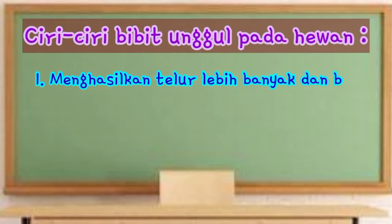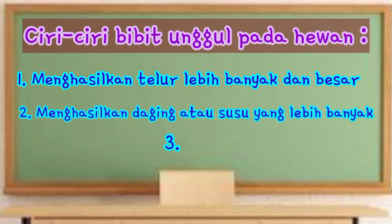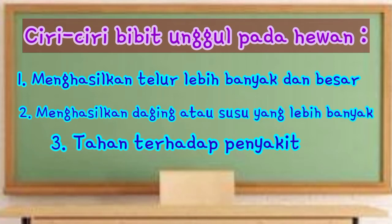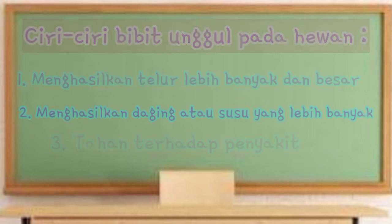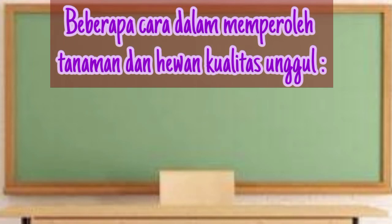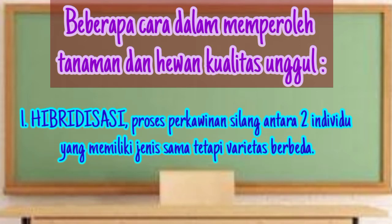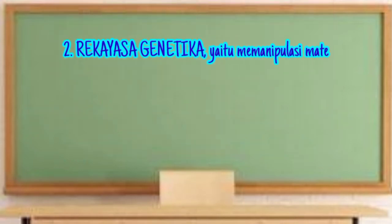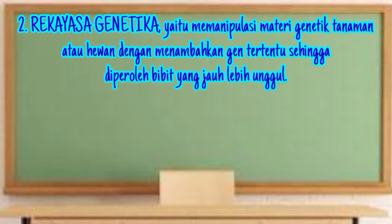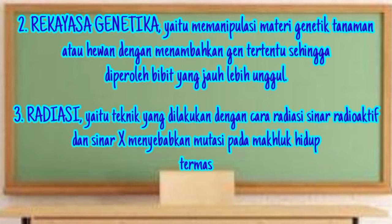Ciri-ciri bibit unggul pada hewan antara lain menghasilkan telur lebih banyak dan besar, menghasilkan daging atau susu yang lebih banyak, dan tahan terhadap penyakit. Berikut beberapa cara dalam memperoleh tanaman dan hewan kualitas unggul: pertama, hibridisasi, yaitu proses perkawinan silang antara dua individu yang memiliki jenis sama tetapi varietas berbeda; kedua, rekayasa genetika, yaitu memanipulasi materi genetik dengan menambahkan gen tertentu sehingga diperoleh bibit yang jauh lebih unggul; ketiga, radiasi, yaitu teknik menggunakan sinar radioaktif dan sinar X yang menyebabkan mutasi pada makhluk hidup termasuk tanaman dan hewan.